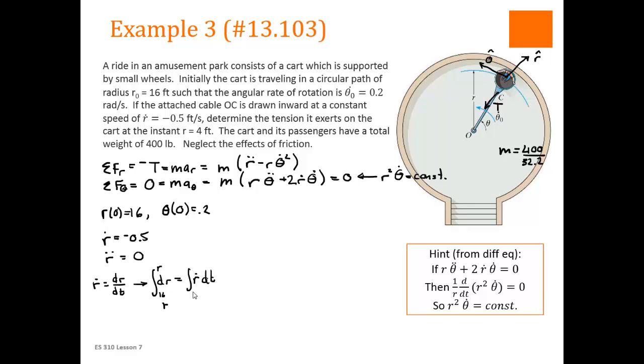This is going to be from the initial, which is t equal to zero, to the time we're interested in, which is t. So this is going to be r minus 16 is equal to r dot, which was negative 0.5, times t.